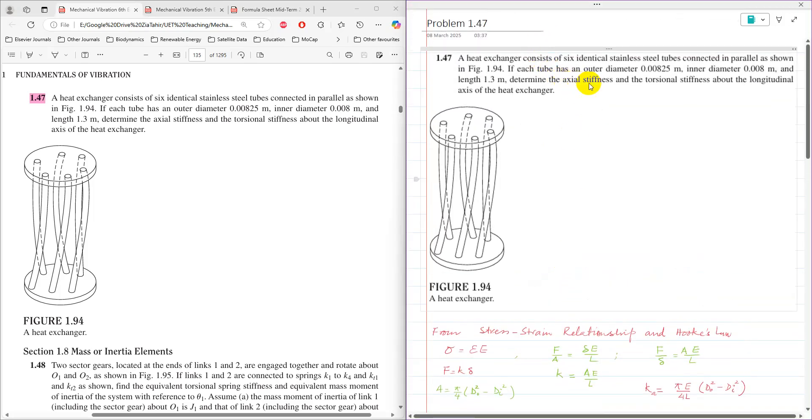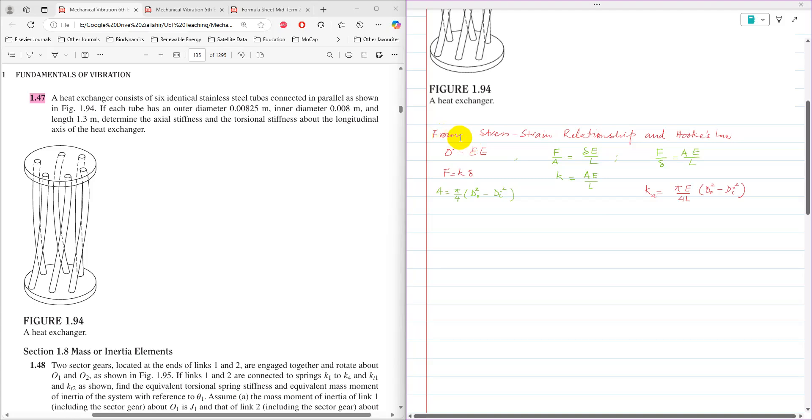Relation for axial stiffness can be derived from stress strain relationship and Hooke's law. Stress is equal to strain into modulus of elasticity. Stress is force over area and strain is deflection over length. Then this formula can be rearranged to F over delta equals AE over L. The Hooke's law for axial direction is F equals K delta, which can be rearranged to K equals F over delta. Then K becomes AE over L.